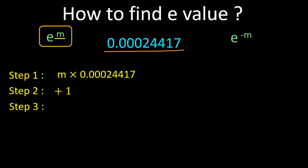After adding one in the second step, whatever answer you get on your calculator, just press multiply and equal to. You have to repeat this step 12 times on your calculator. Press multiply and equal to — that is one time. Then again press multiply and equal to — that is the second time. Again multiply and equal to — third time. Likewise, repeat pressing multiply and equal to 12 times. After doing this 12 times, whatever answer you get is the answer of your e power m value.